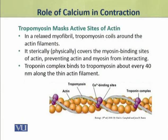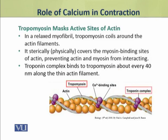In a relaxed myofibril, tropomyosin coils around the actin filaments. During this coiling, it physically covers the myosin binding sites present on actin. Because of this, actin and myosin are prevented from interacting. Troponin attaches to tropomyosin at every 40 nanometer interval and helps to hold and maintain tropomyosin in its position.